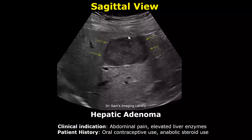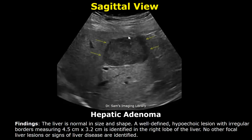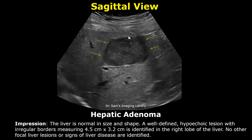For hepatic adenoma, the clinical indication can be abdominal pain and elevated liver enzymes. It is often seen in patients with oral contraceptive use or anabolic steroid use. This tumor also has variable appearances; in this case a well-defined hypoechoic lesion with irregular borders is seen. Mention these features and write the size and location in the findings. In the impression, we write the findings but we cannot confirm an adenoma on ultrasound alone, so we do not write adenoma — we just write the findings and advise further testing and clinical correlation.